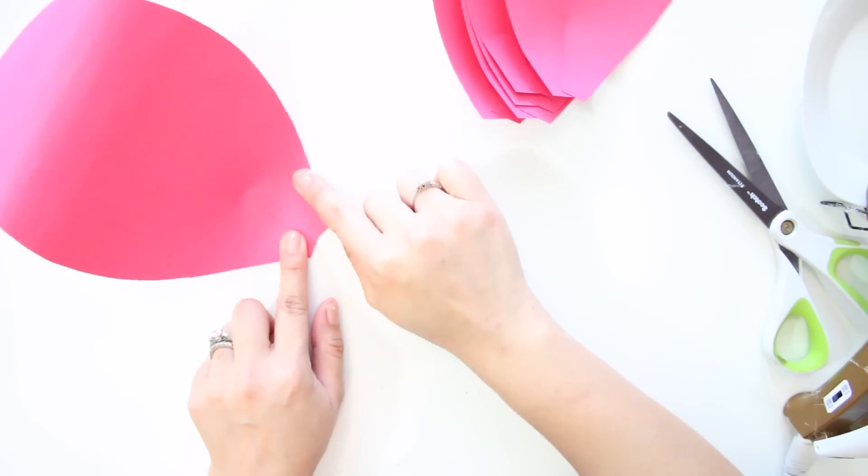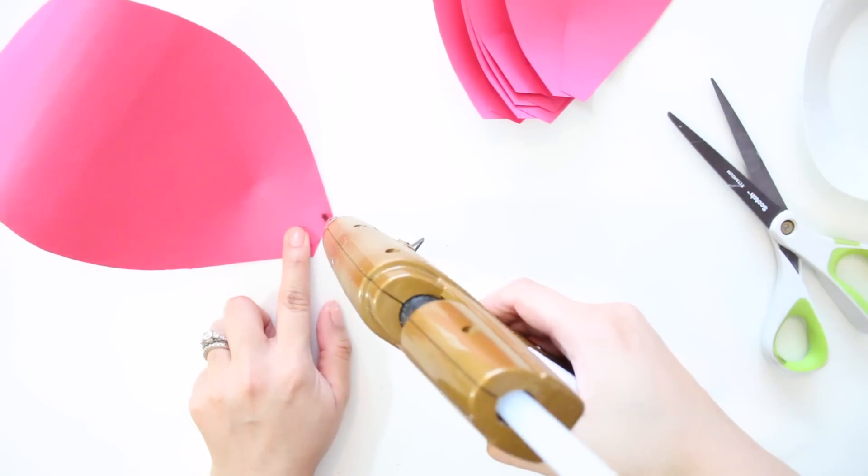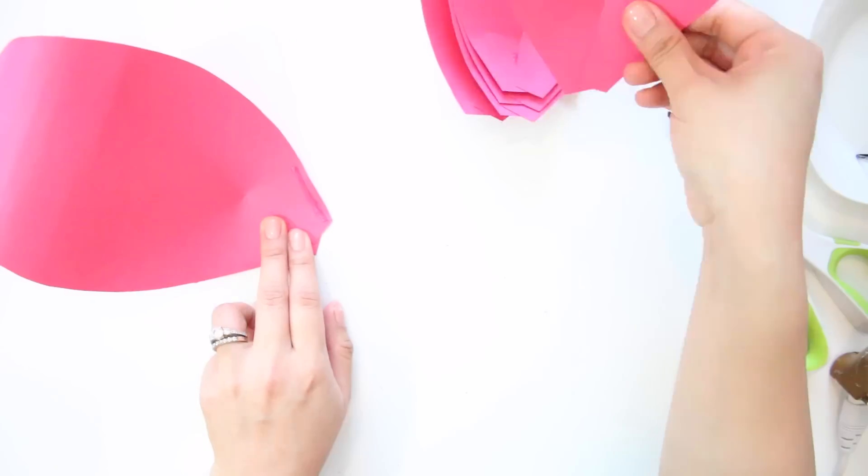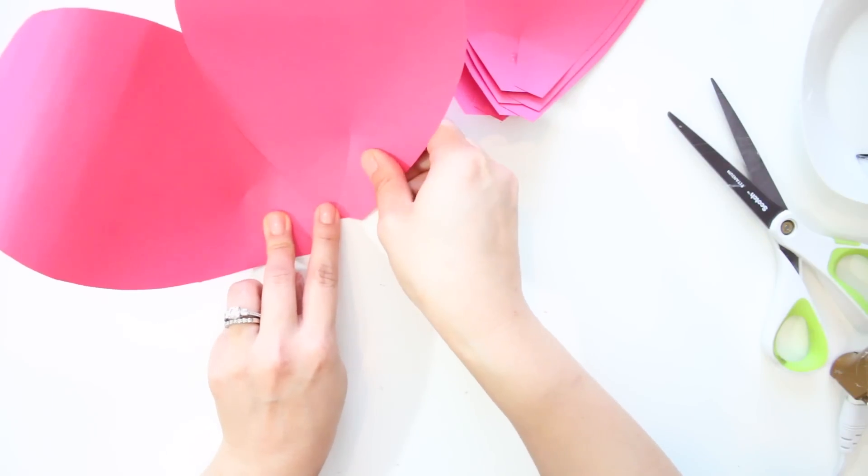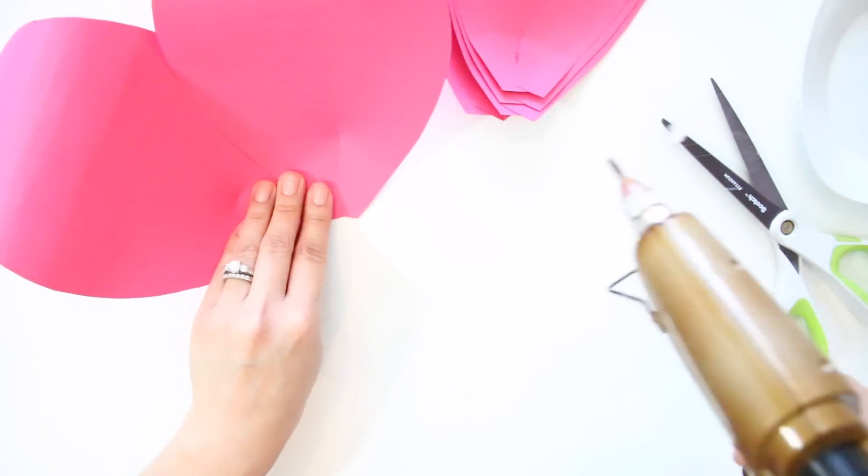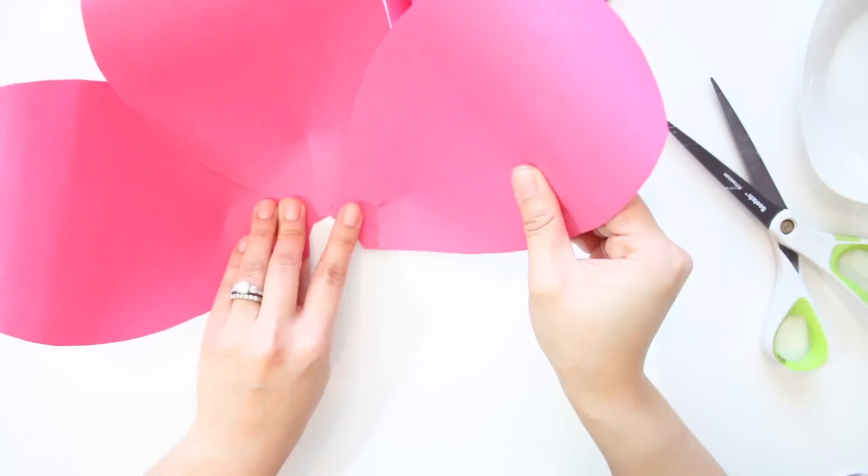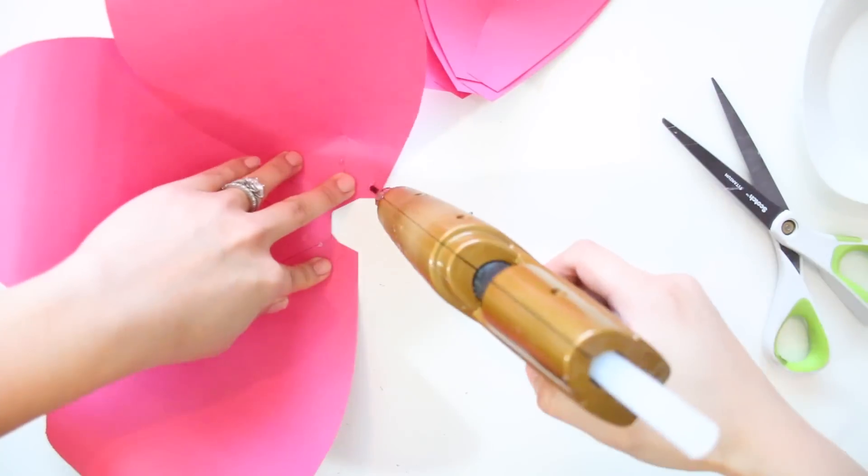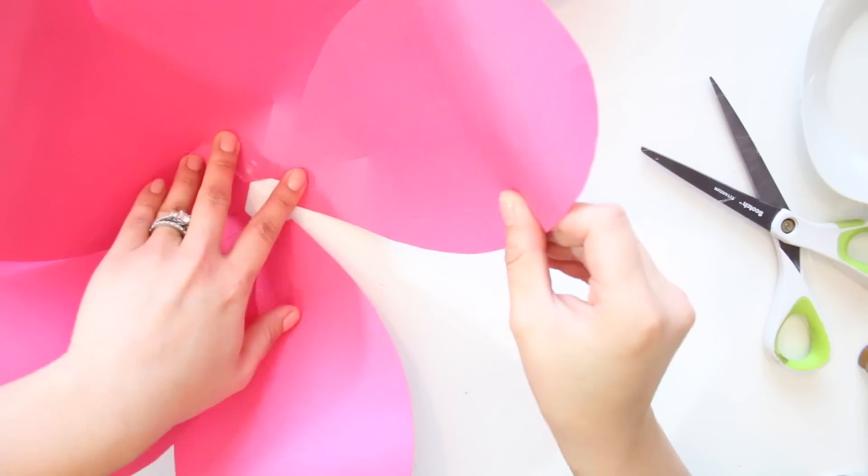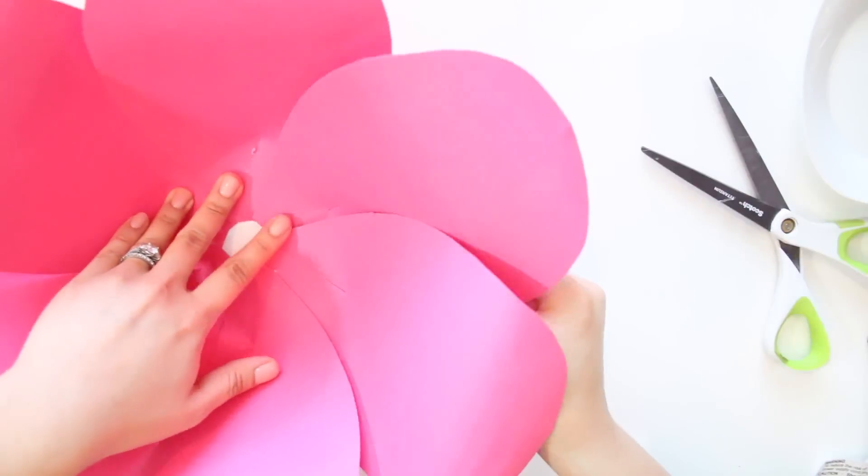Now, begin to glue all of your petals together to form a bowl. Just put glue on one side of the petal and attach the next petal on top. And just go all the way around.